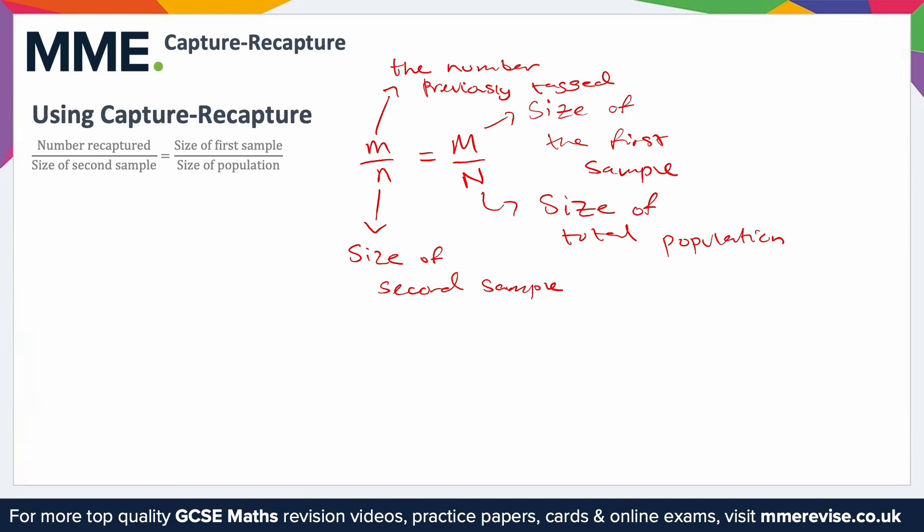This can be rearranged however you like because you might be finding different things. For example, you could be given the number recaptured, the size of the second sample, and the size of the first sample and expected to find the population. But also you could be given the size of the first sample, the size of the population, and the number recaptured and then expected to find the size of the second sample. You could be asked to find any of the different variables, so being able to rearrange it is really important.